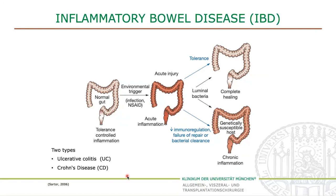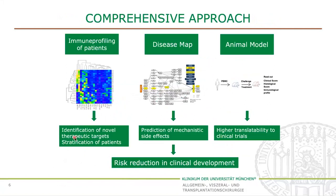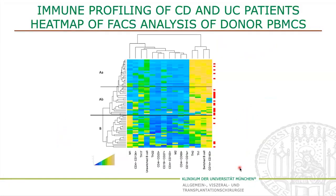To investigate this, we have different approaches. We do immune profiling of IBD patients to investigate which cells are involved, and therefore to be able to identify novel therapeutic targets. Then we have the disease map to understand connections and also predict mechanistic side effects. And the animal model, with which we have higher translatability to clinical trials, and our goal is to reduce the risk in clinical development. Two of these approaches were also used in the paper I present today. So the first thing we did was to analyze the inflammatory profile of CD and UC patients.